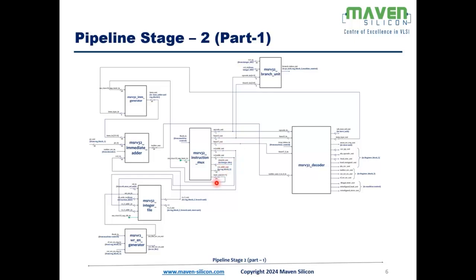The branch unit handles both conditional and unconditional jump instructions. The branch-taken output will be high whenever a branch or jump instruction is fetched, and zero for all other instructions. The decoder unit is the hub of the processor design — it takes inputs from the instruction mux such as opcode, function3, function7, and the I-adder output, and generates multiple control signals that control the operation of the remaining blocks.